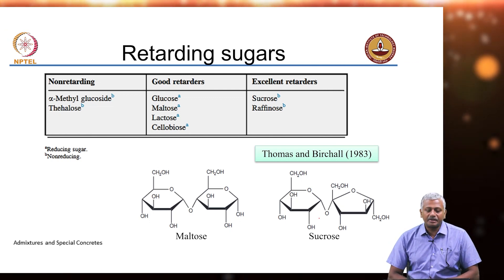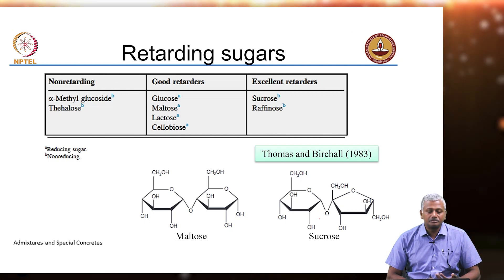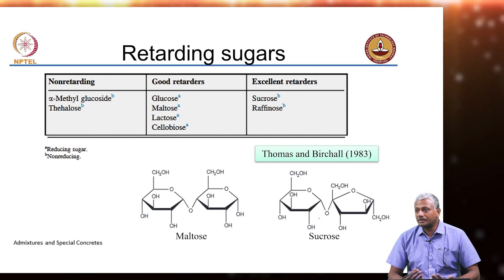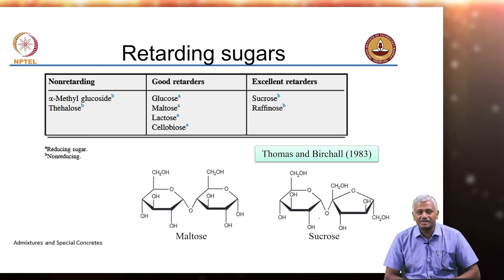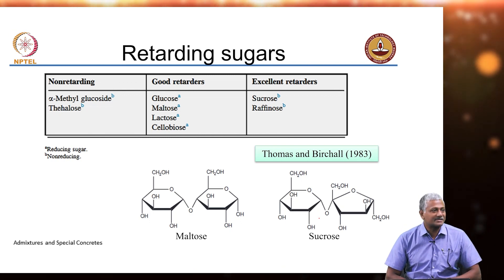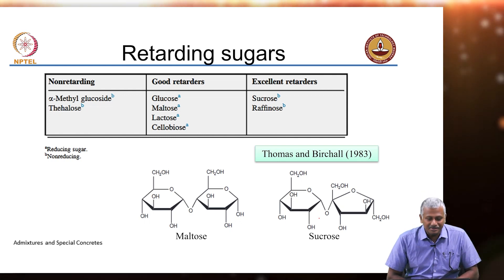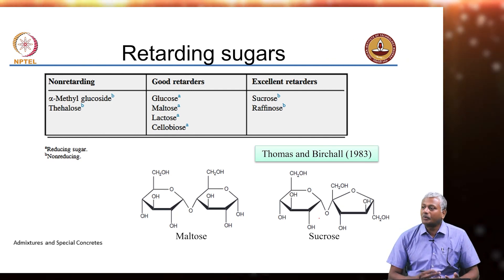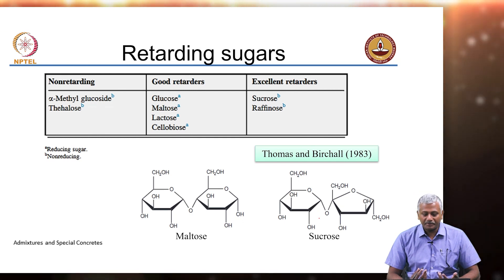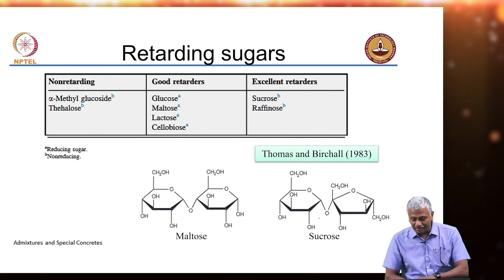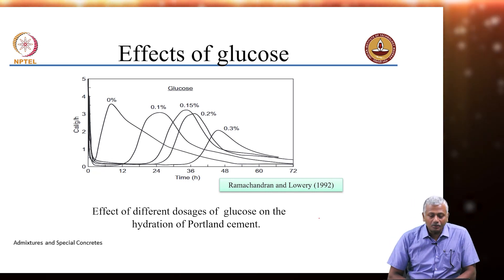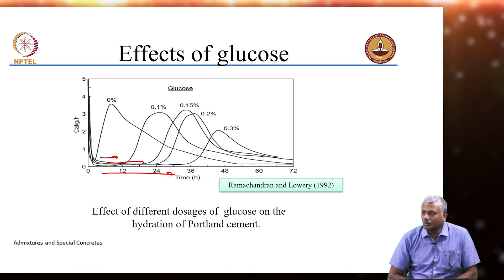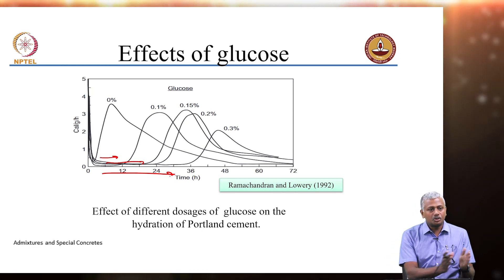Good retarders among sugars typically include glucose, maltose, lactose, and cellobiose, while excellent retarders are sucrose and raffinose. When you add glucose into a cementitious system, you are again extending the dormant period. All setting accelerators shorten the dormant period; all setting retarders extend the dormant period.